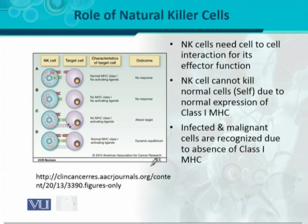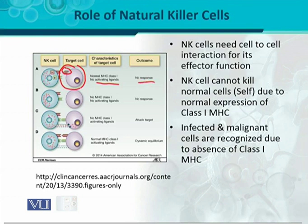In this figure, there is a comparison showing NK cells, target cell characteristics, and outcomes. In the first case, the target cell carries normal class 1 MHC expression, so the NK cell does not treat it as a threat — the antigen ligand is not presented and there is no response. In the second case, both class 1 MHC and the ligand are absent, so again there is no response.